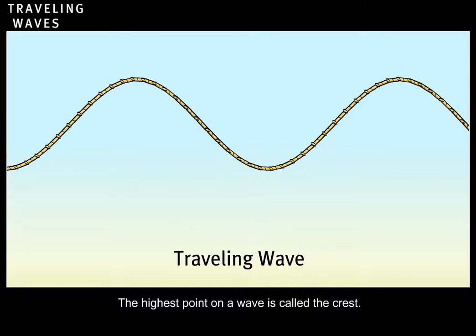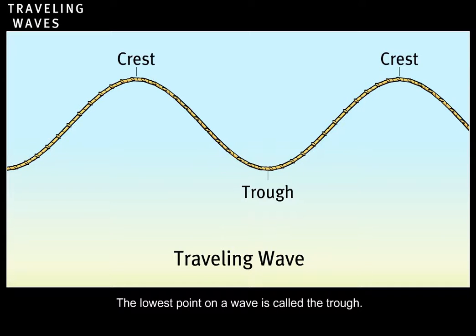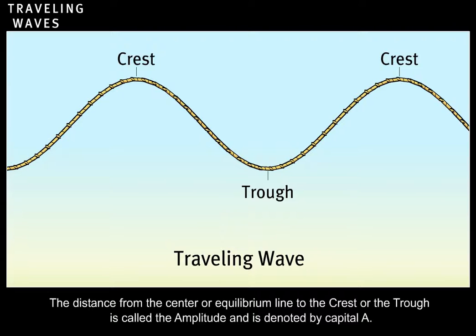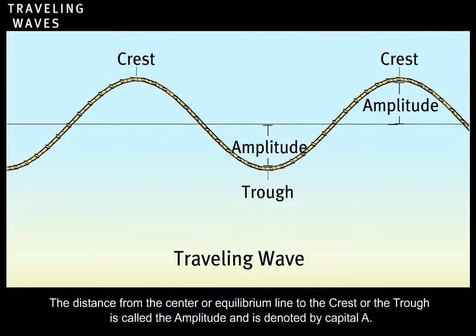The highest point on a wave is called the crest. The lowest point on a wave is called the trough. The distance from the center or equilibrium line to the crest or the trough is called the amplitude and is denoted by capital A.